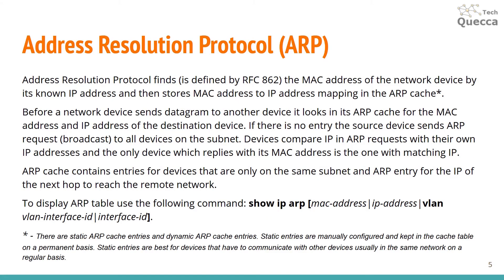To find that MAC address, PC1 uses the Address Resolution Protocol, ARP. ARP is defined by RFC 826. The main purpose of ARP is to find the MAC address of a network device by its known IP address, and then store the MAC-to-IP address mapping in the ARP cache. There are static and dynamic ARP cache entries. Static entries are manually configured and kept permanently, best for devices that communicate regularly on the same network. Before sending a datagram, a device checks its ARP cache; if no entry exists, it sends an ARP request to all devices on the subnet, and only the device with the matching IP replies with its MAC address. ARP cache contains entries only for devices on the same subnet, or the ARP entry for the next-hop IP to reach a remote network.